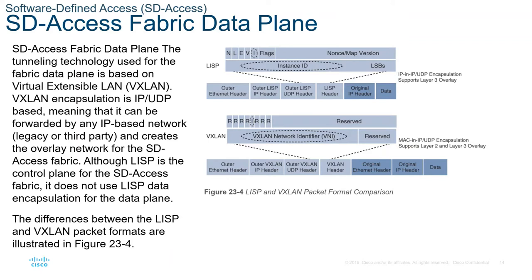For the SD-Access fabric data plane, the tunneling technology used is based on the Virtual Extensible LAN or VXLAN. VXLAN is an encapsulation technique for data packets — when encapsulation is added to data packets, a tunnel network is created. Tunneling encapsulates data packets from one protocol inside a different protocol and transports the original data packets unchanged across the network. A lower-layer or same-layer protocol from the OSI model can be carried through this tunnel, creating an overlay — in SD-Access, this overlay network is referred to as the fabric.